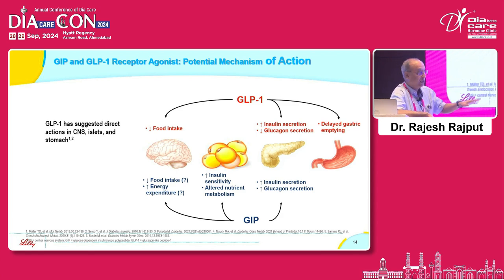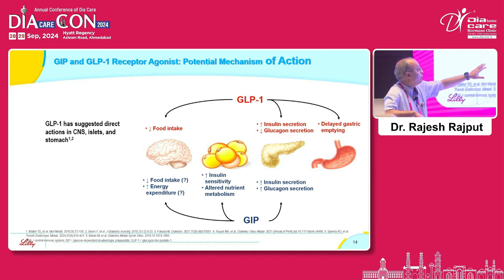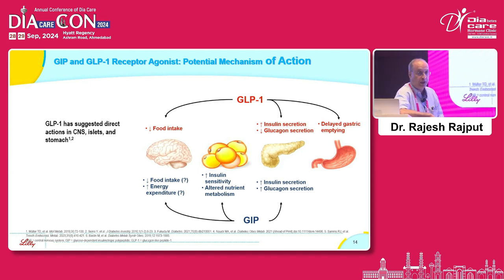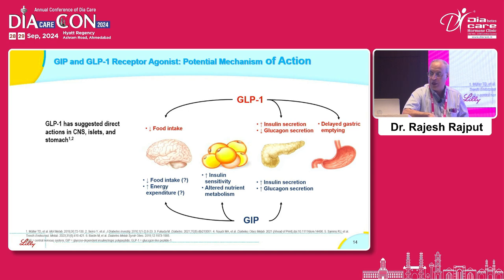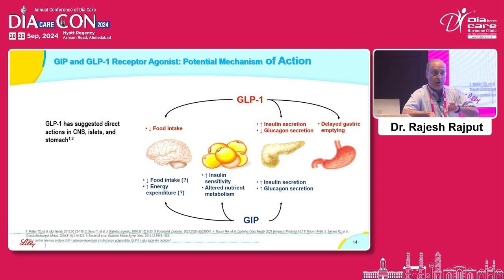Apart from action on pancreatic alpha and beta cells, adipose tissue is a primary organ where GIP acts. Adipose tissue is now recognized as the biggest endocrine organ of the human body, and it is dysfunctional in patients with type 2 diabetes. There is dysfunctional fat partitioning in type 2 diabetes, so if a drug can change this dysfunctional fat partitioning into good fat partitioning, it is probably going to be advantageous.